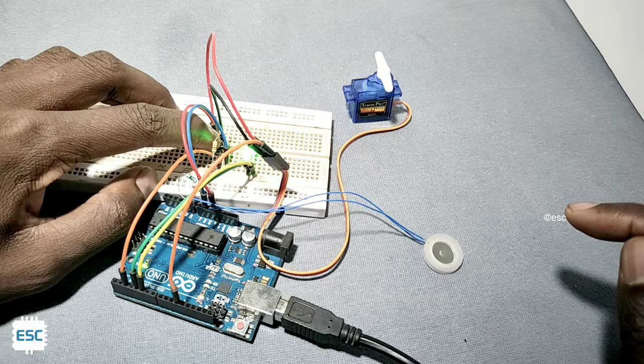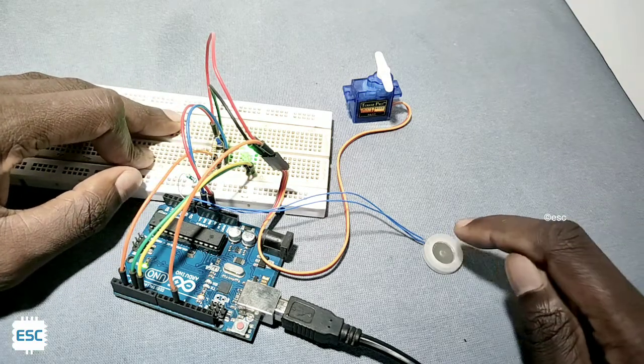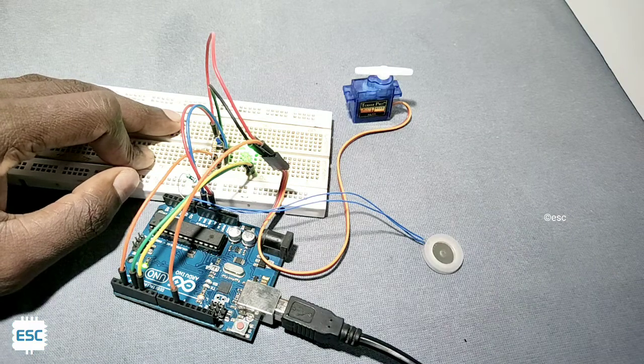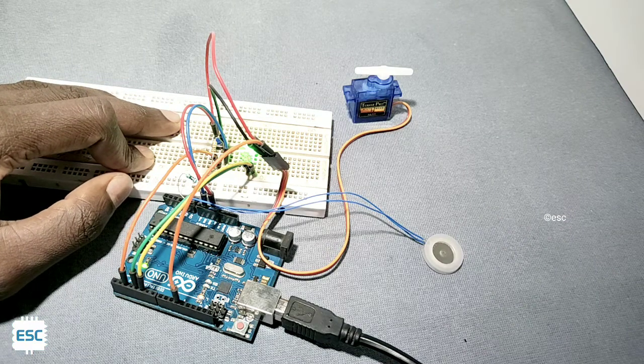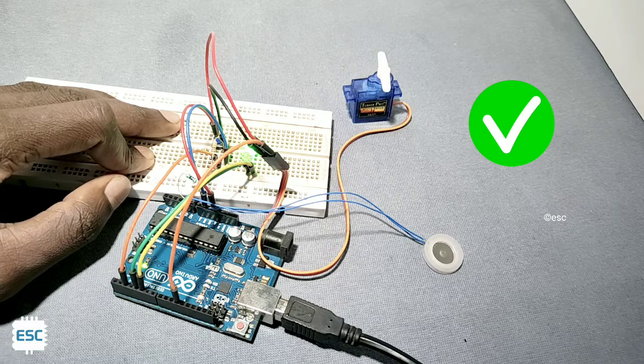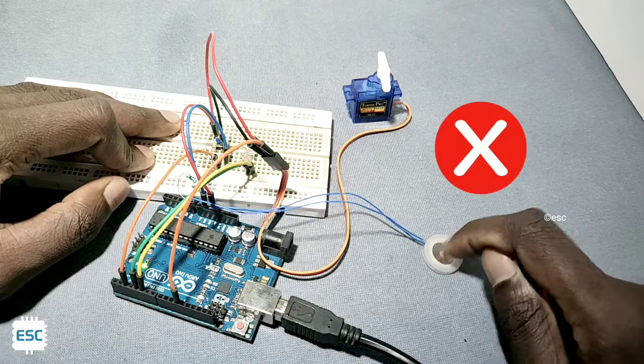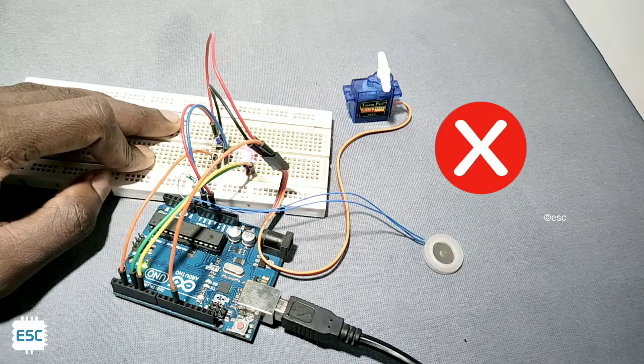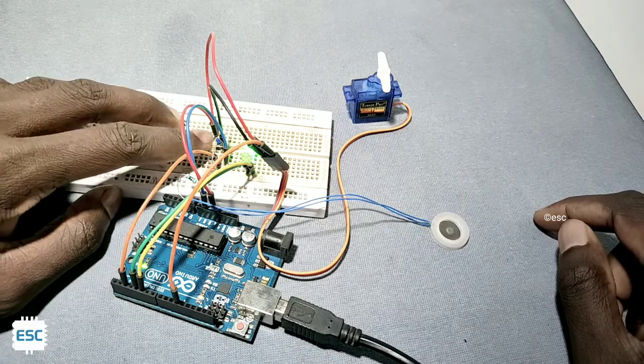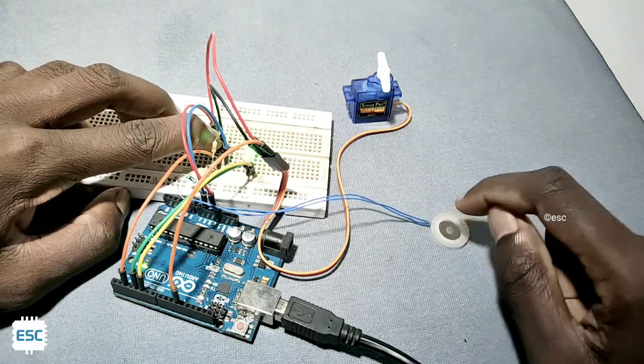After that you can see the LED is blinking and let's test. You can see that the correct knock will trigger the servo and also the green LED. A wrong knock will not trigger the servo and it will show the red LED indication. To record a new lock, do the same: press and hold the push button and record it.